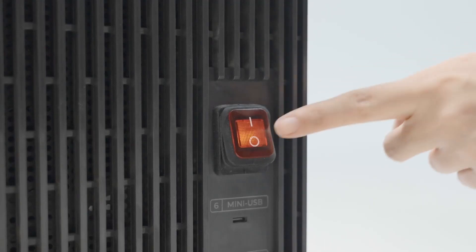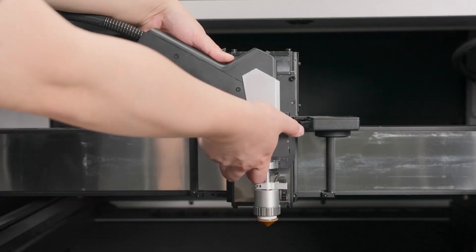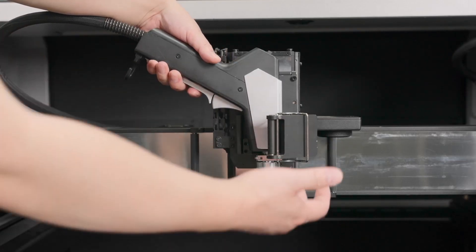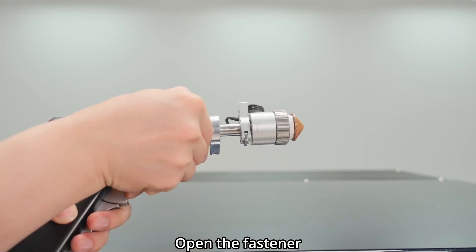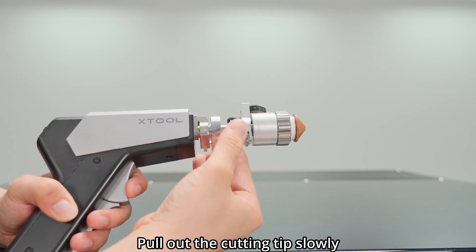Turn off the two machines, take out the welding head, open the fastener, pull out the cutting tip slowly.